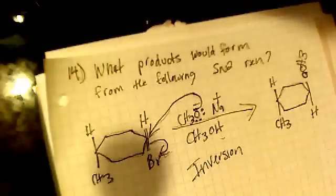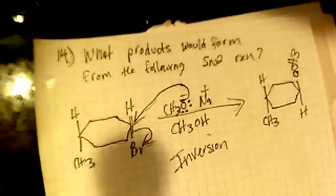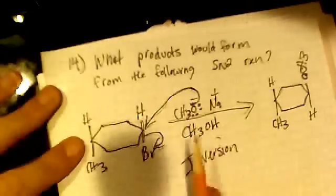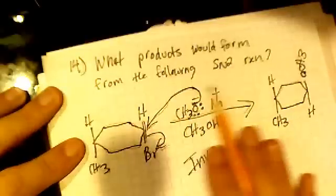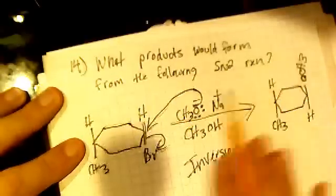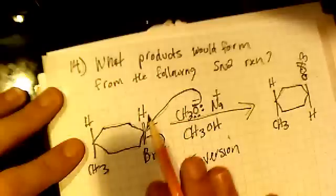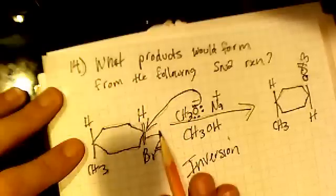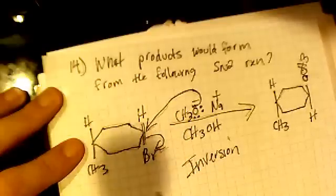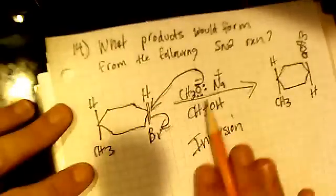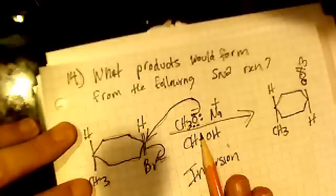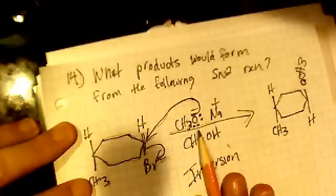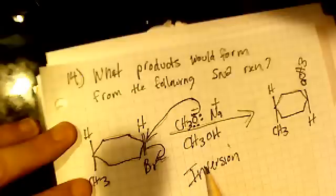So the question is, what products would form from the following SN2 reaction? They give us a cyclohexane ring that has a methyl group and a bromine group, and they're cis. They give us sodium methoxide in methanol.